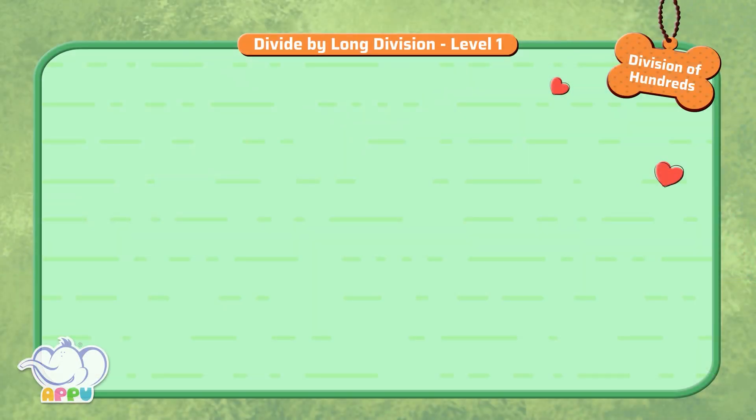Divide by long division. 344 divided by 2. We write the division bracket and write 2 outside the bracket and 344 inside the bracket.